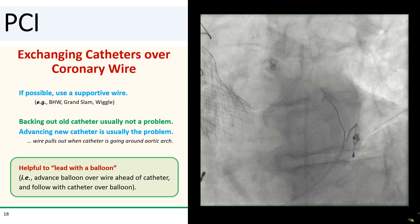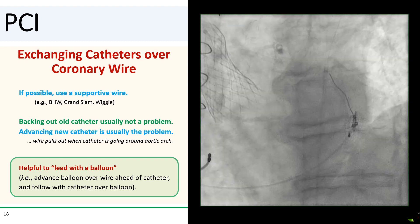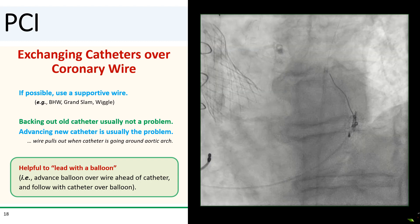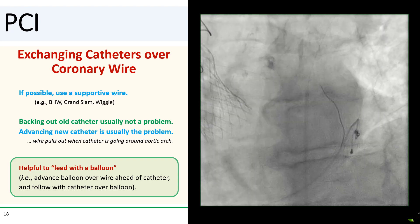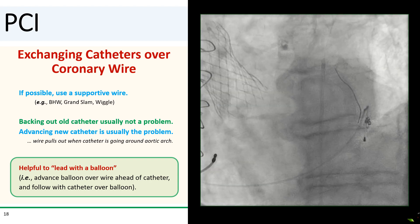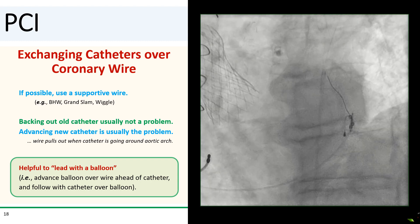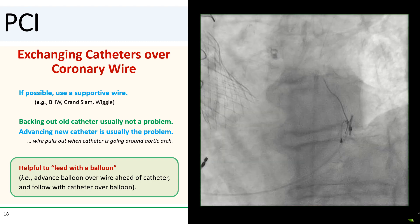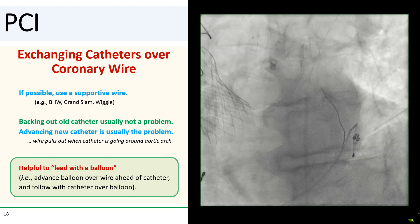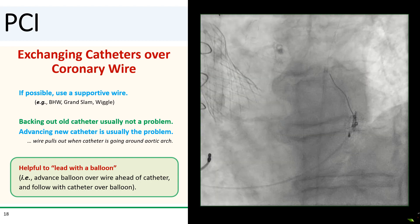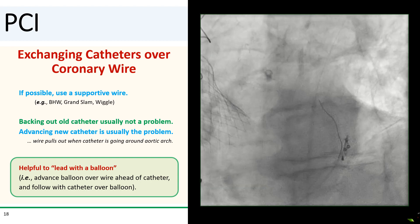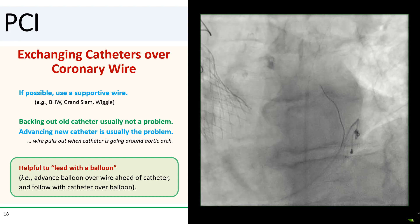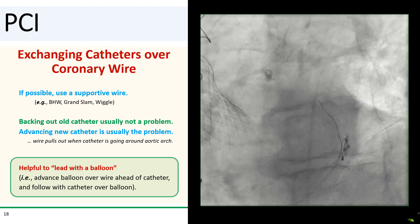To prevent this from happening, I find it useful to lead with a balloon—advance a balloon over the wire ahead of the catheter, and then follow with the catheter over the balloon shaft. The balloon shaft in combination with your wire will generally provide just enough support to act as a rail and keep the catheter straight. You can also do this when backing out the old catheter, but it is especially important when advancing your new catheter over the coronary wire.